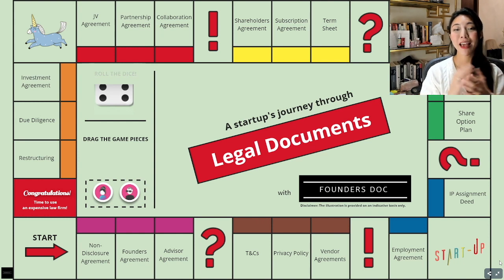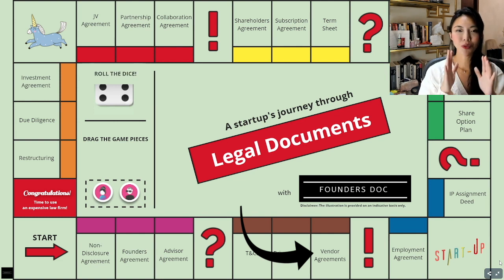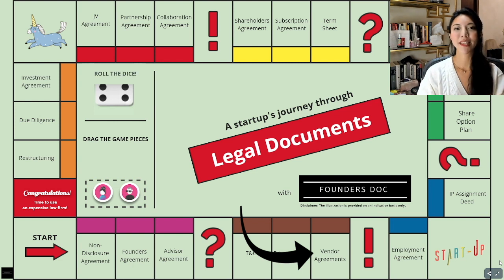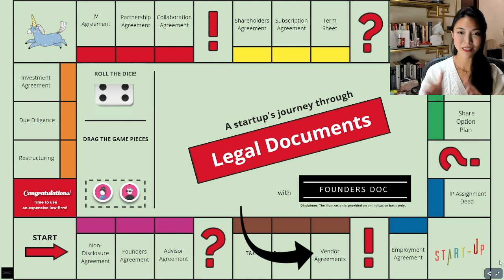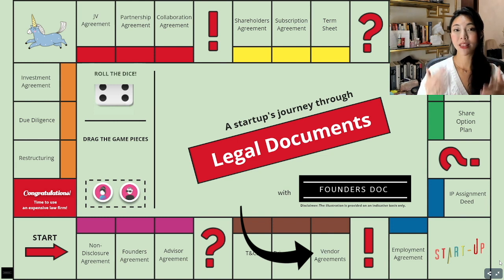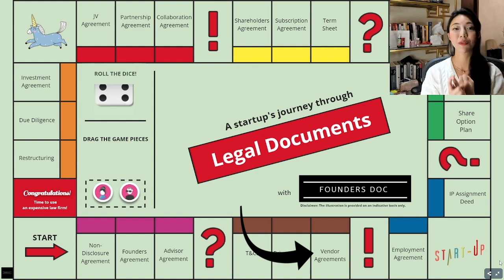Moving on to our final document, the vendor agreement. The importance of your relationship with your suppliers and vendors depends on the type of business you're in as well as the competitive nature of your business. There are a couple of things to be aware of. Number one: quality. Ensuring that your vendors and suppliers maintain a reasonable and satisfactory quality when they provide products and services to you. You can achieve that by having robust reps and warranties in your vendor or supplier agreements, or by having a service level agreement.